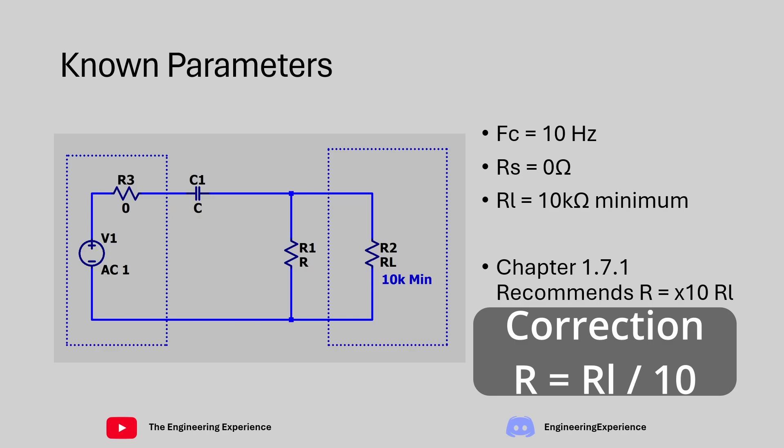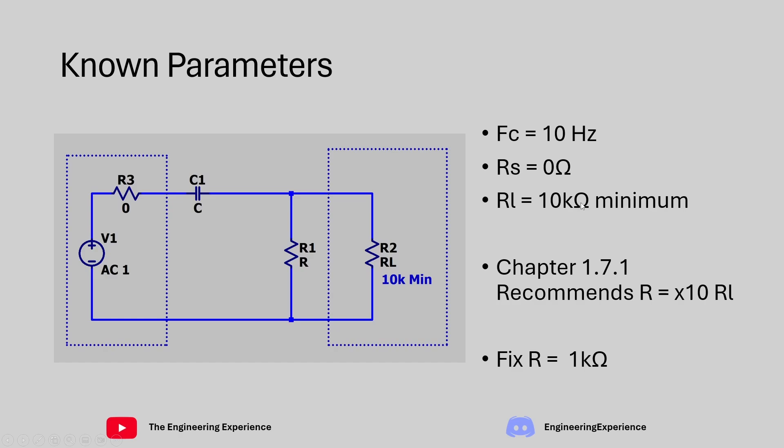Referencing back to Art of Electronics chapter 1.7.1, page 44 near the bottom left, the book recommends that you have a filter resistor value that is a tenth of the load resistor value so that it doesn't affect the filter performance significantly. So as we have a load resistor of 10 kilo ohms, our R is going to be fixed at 1 kilo ohm which is a tenth of 10 kilo ohms.